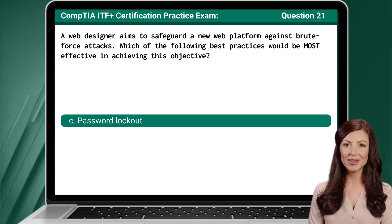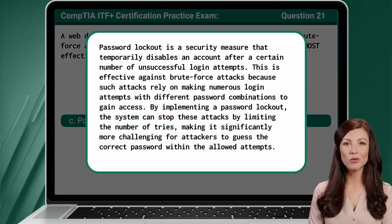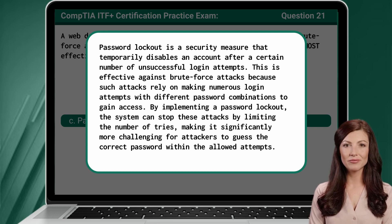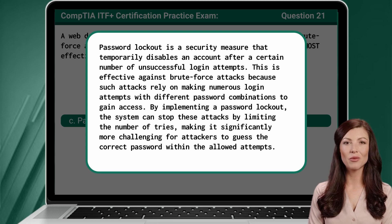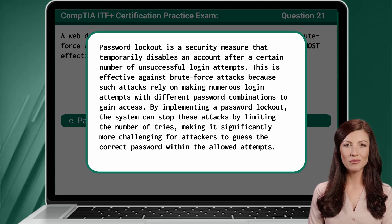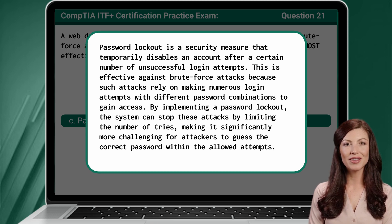The answer is C — Password Lockout. Password lockout is a security measure that temporarily disables an account after a certain number of unsuccessful login attempts. This is effective against brute force attacks because such attacks rely on making numerous login attempts with different password combinations to gain access. By implementing a password lockout, the system can stop these attacks by limiting the number of tries, making it significantly more challenging for attackers to guess the correct password within the allowed attempts.